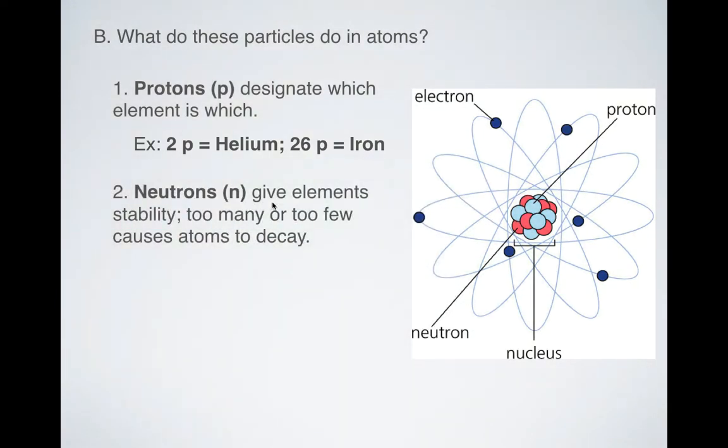What do neutrons do? Well, neutrons give elements stability. So if you have a lot of neutrons, that's going to make you unstable. If you have too few neutrons, that's going to make you unstable. There's like a nice ratio that you want to have to make your atom kind of stick together and not break apart into smaller particles.